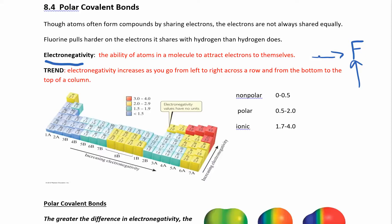Electronegativity increases toward fluorine — that's the trend from chapter 7: it increases going right and increases going up the periodic table. Down here are electronegativity numbers. Notice the noble gases are missing because they don't form covalent compounds — they are monatomic gases that don't form bonds, so we don't need their electronegativity values. Everything increases toward fluorine.